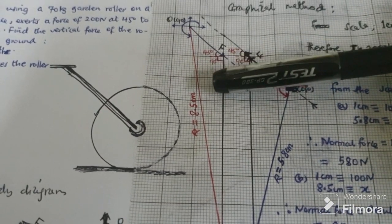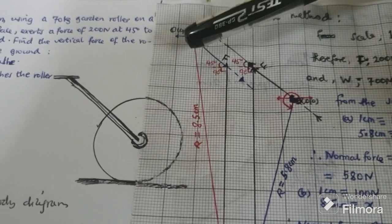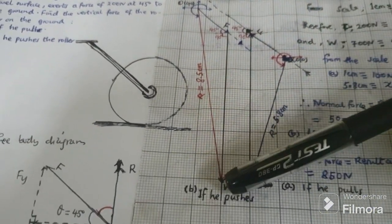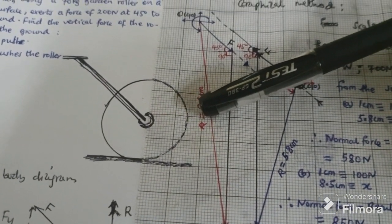Now, it is 45 degrees plus 90 degrees. Our resultant vector is drawn from the tail of the first vector to the head of the last vector, and is equal to 8.5 centimeter.